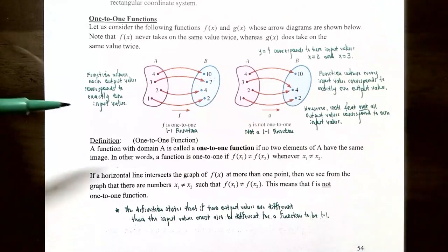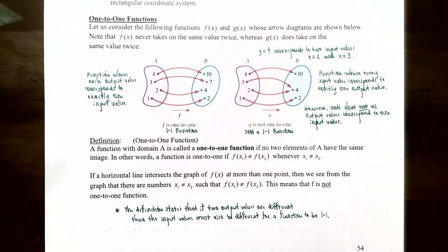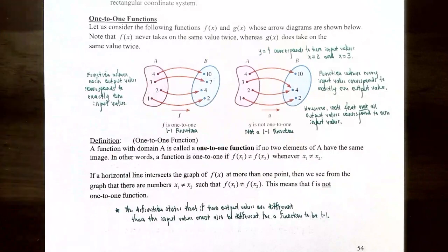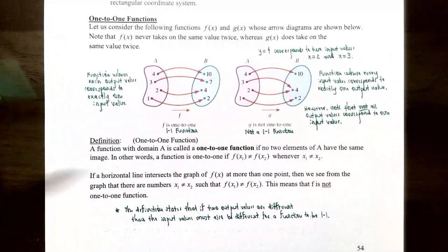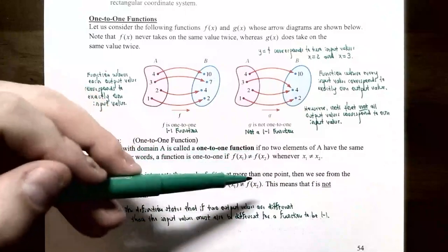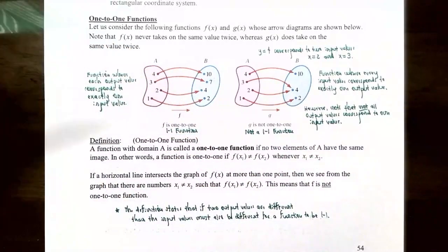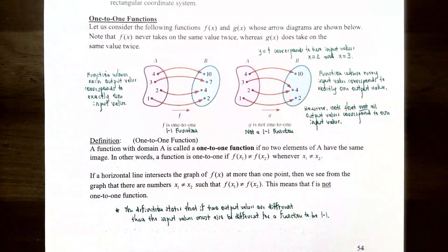The definition of a one-to-one function: a function with domain A is called a one-to-one function, abbreviated 1-1, if no two elements of A — no two x values or input values — have the same image or output value. In other words, a function is one-to-one if different y values means the x values must be different: if f(x₁) ≠ f(x₂), then x₁ ≠ x₂. Two different x values must go to two different y values.